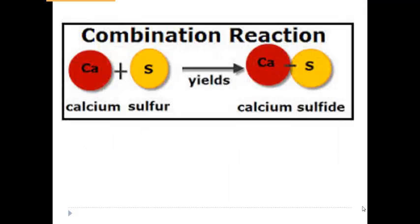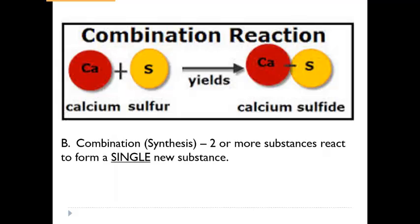Let's take a look at our first type of reaction: the combination reaction, also called synthesis reaction. Notice that it starts out as two separate elements — calcium and sulfur. Sometimes it might be two compounds being added together, but you do need at least two reactants. On the product side, there is only one item. Combination synthesis by definition is two or more substances that react and form a single new substance.